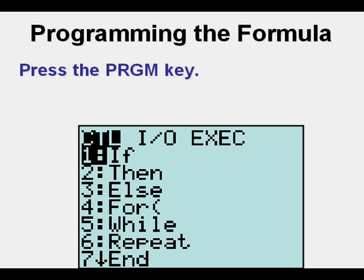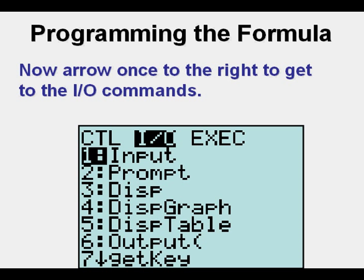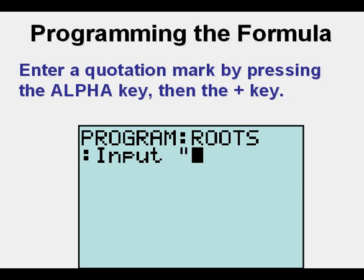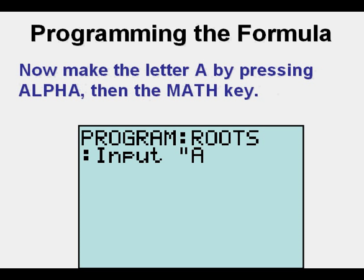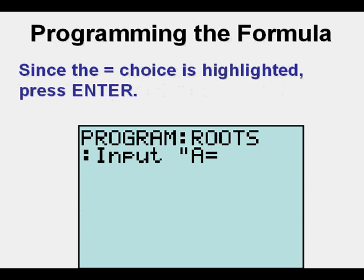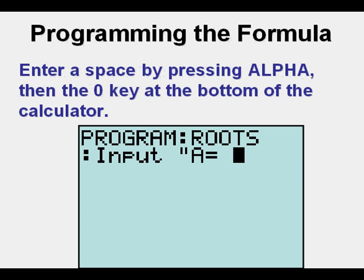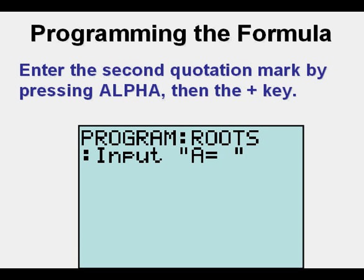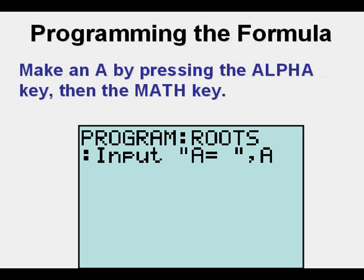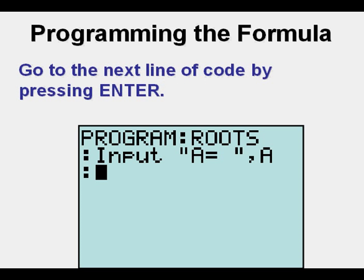Press the program key. Arrow once to the right to get to the input/output commands. Since Input is highlighted and we want to use Input, press Enter. Enter a quotation mark by pressing the Alpha key, then the plus key. Make the letter A by pressing the Alpha key, then the Math key. Go to the Test menu by pressing Second, then the Math key. Since the equal sign choice is highlighted, press Enter. Enter a space by pressing Alpha, then the zero key. Enter a second quotation mark by pressing Alpha, then the plus key. Press the comma key, then make an A by pressing Alpha, then the Math key.